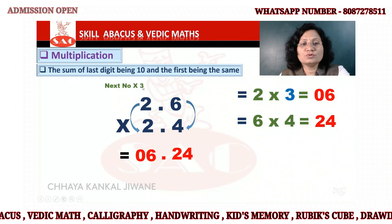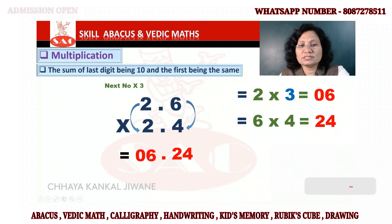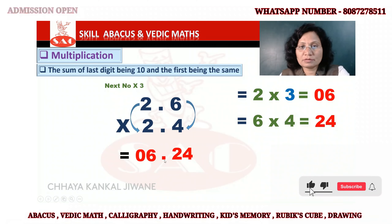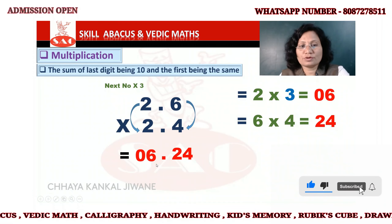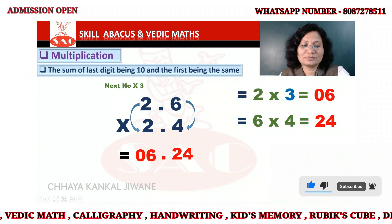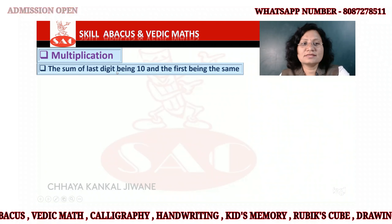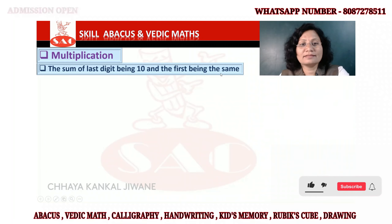Same condition here: 2.3 times 2.6. 2 times 3 is 06, then put a decimal point, and 6 times 4 is 24 — so the answer is 06.24, which is 6.24. That's clear. The sum of the last digits is 10 and the first digits are the same.